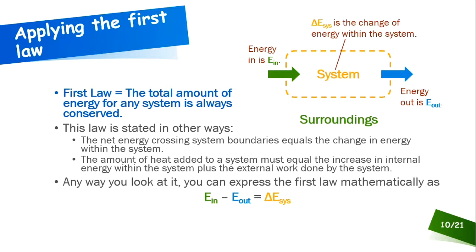Applying the first law: we look at the energy going in, the energy coming out of the system, and the change of energy within the system itself. These three quantities must balance out according to the mathematical relationship shown — the difference between what's coming in and out equals the change of energy that occurred within the system.